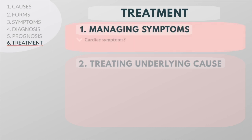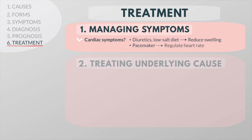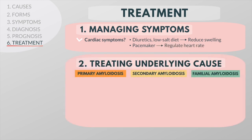Various drugs can help relieve symptoms caused by amyloidosis. For example, a patient with cardiac involvement may be given diuretics and placed on a low-salt diet to help reduce swelling in the legs. Depending on the symptoms, a pacemaker may be implanted to regulate the heart rate. There are also therapies to treat the underlying cause of amyloidosis.